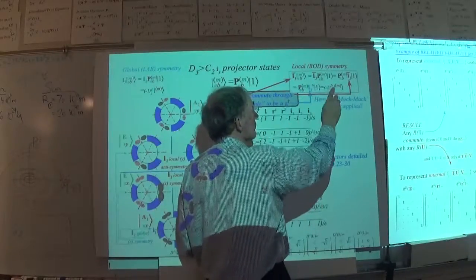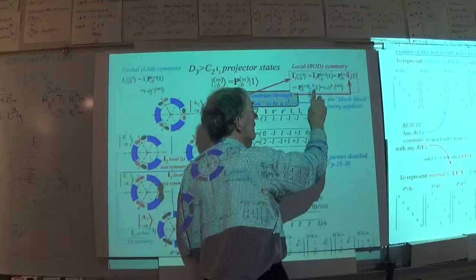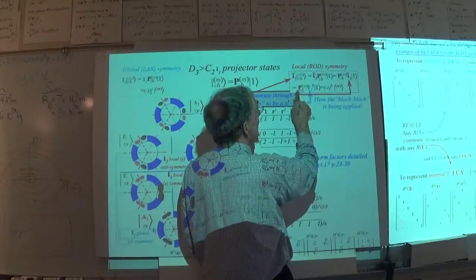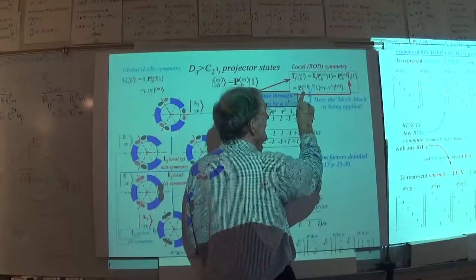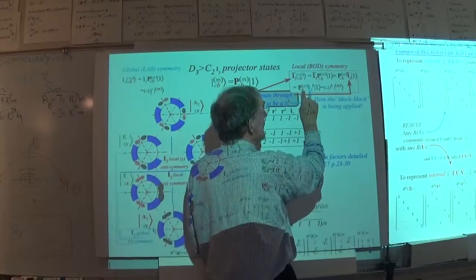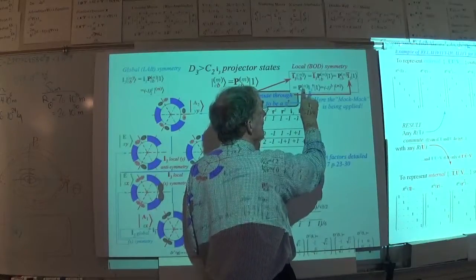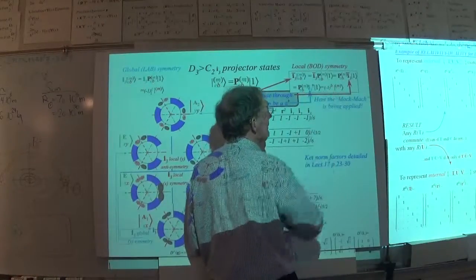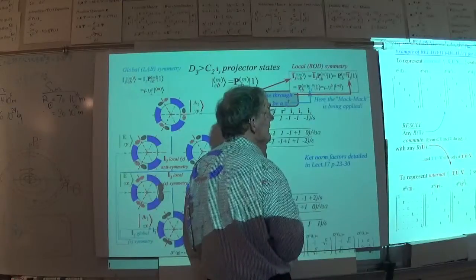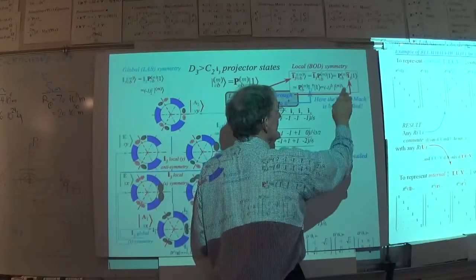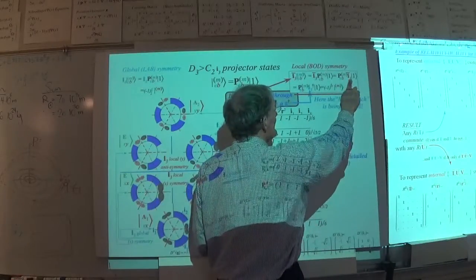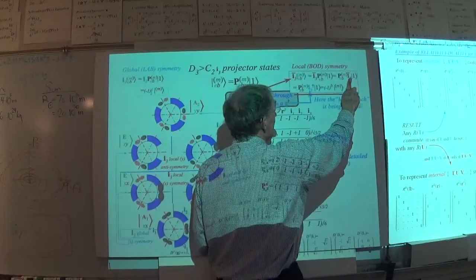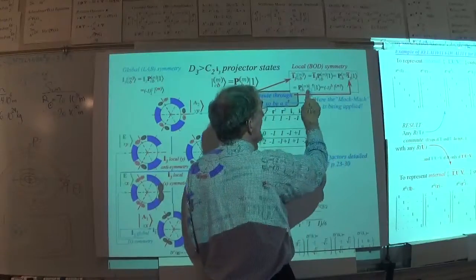These are all unitary, so I can do that. Then I multiply by this thing on the right-hand side, and I get it's even or odd depending on what the right-hand index is. So the Mach-Mach principle is being applied right here to make this into that.